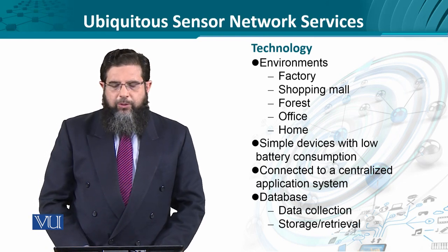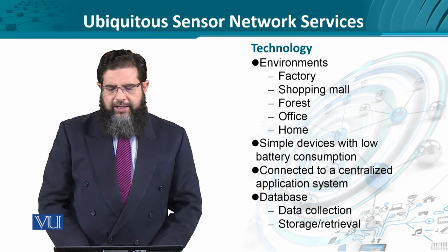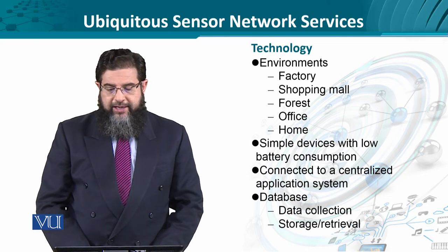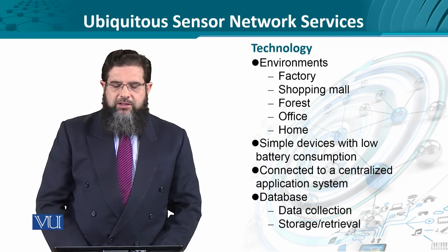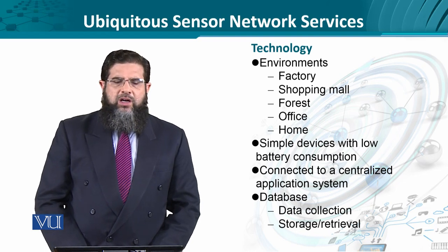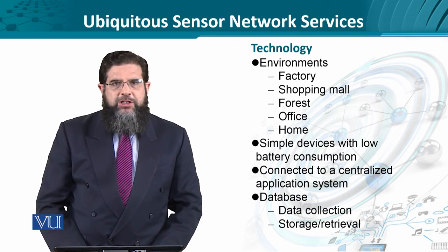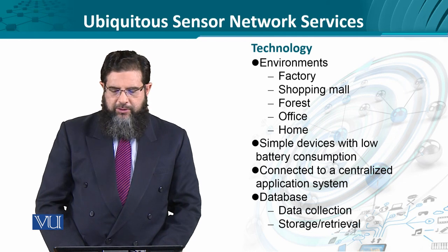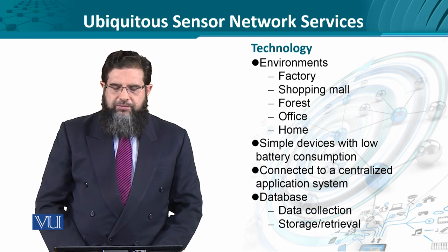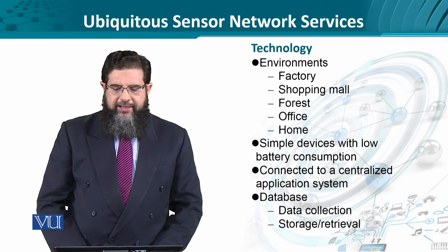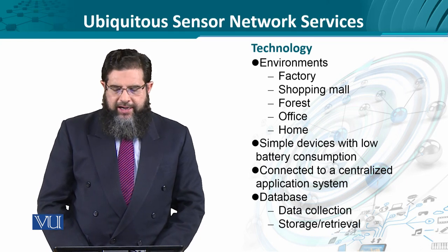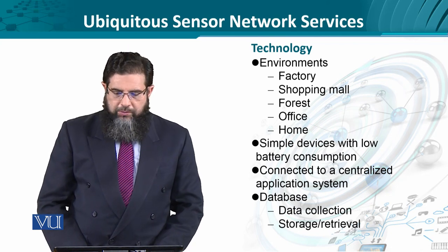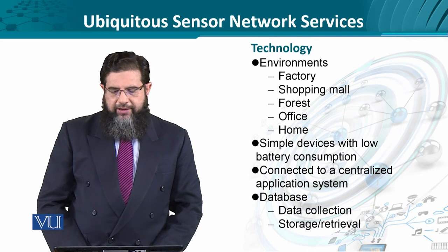Sensor networks can be deployed in a variety of environments: plant automation and factories, controller area networks, security and safety systems in shopping malls, fire detection and prevention in forest sensor networks, HVAC-related office automation, and home automation — for example, smart homes and green homes. All these environments require different technologies.